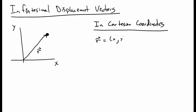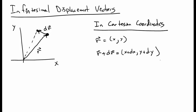So in Cartesian coordinates, that point is at x, y. Let's consider a very nearby point — differentially nearby — so it's some distance dr away. The new point is at r plus dr, and certainly that is at x plus dx, y plus dy.